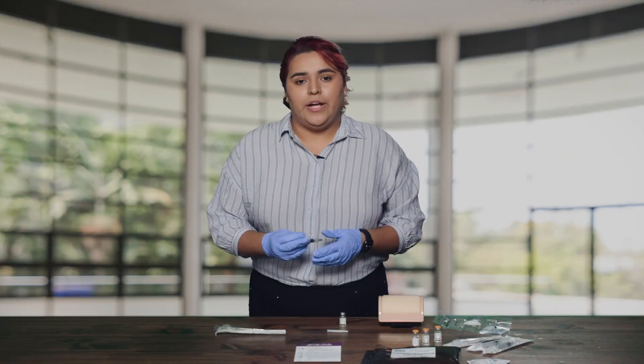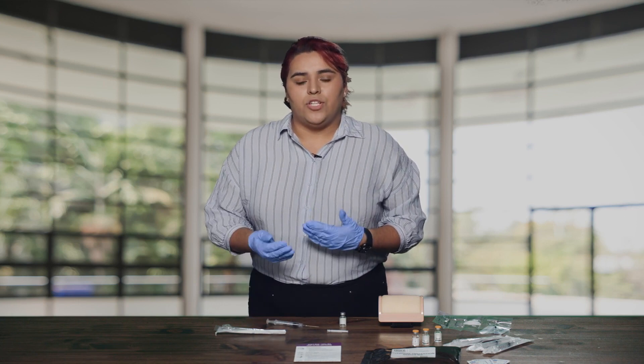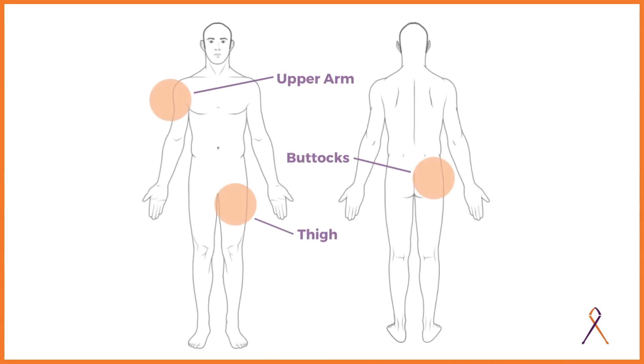There are three recommended areas of the body for this type of injection, all of which have large muscle groups. The best two are either the upper outer arm or the outer thigh. If for whatever reason these two areas are not accessible, you can also inject into the upper and outer quadrants of the buttocks. The needle can penetrate light layers of clothing, but ideally you should pull back the clothing to expose the skin and sterilize the injection site using one of the provided alcohol wipes.